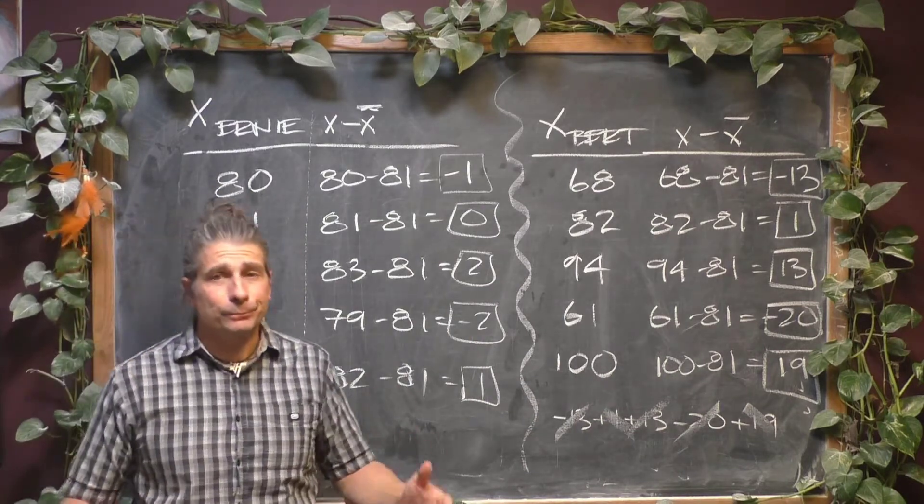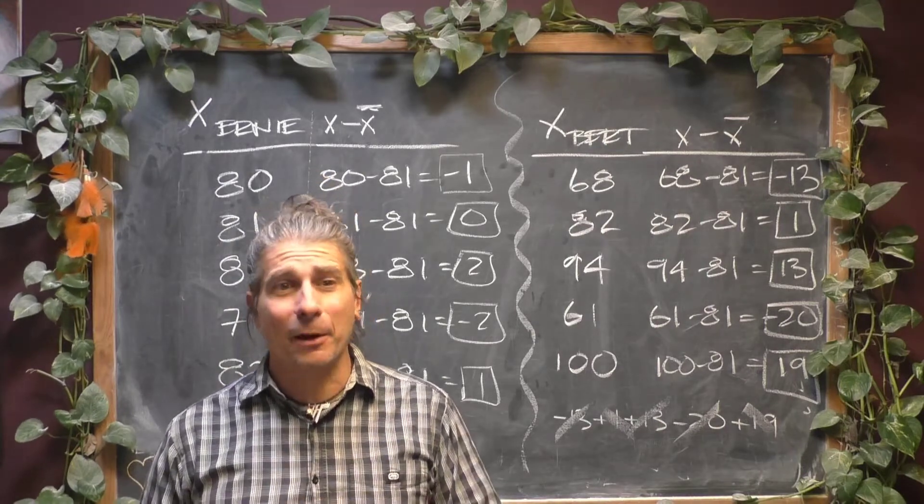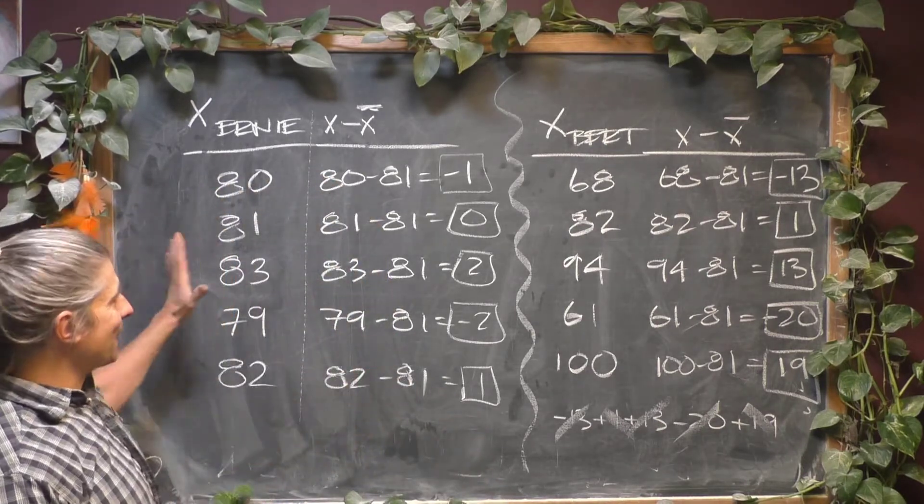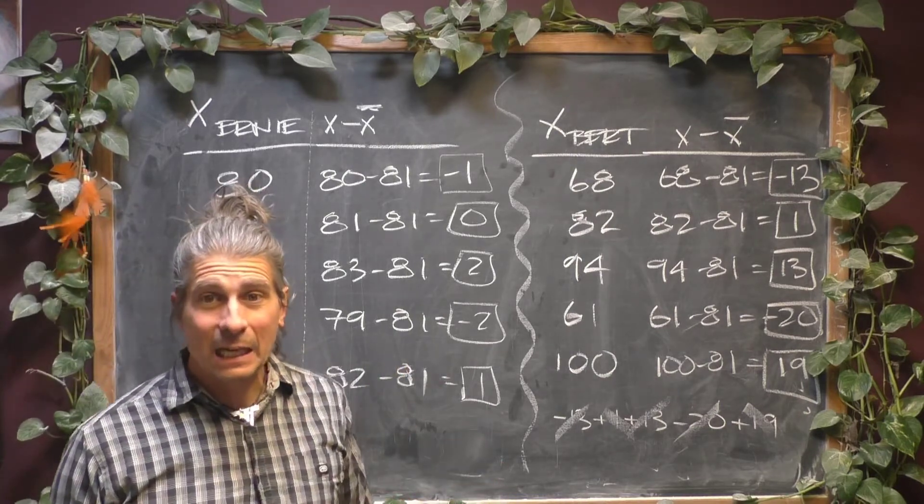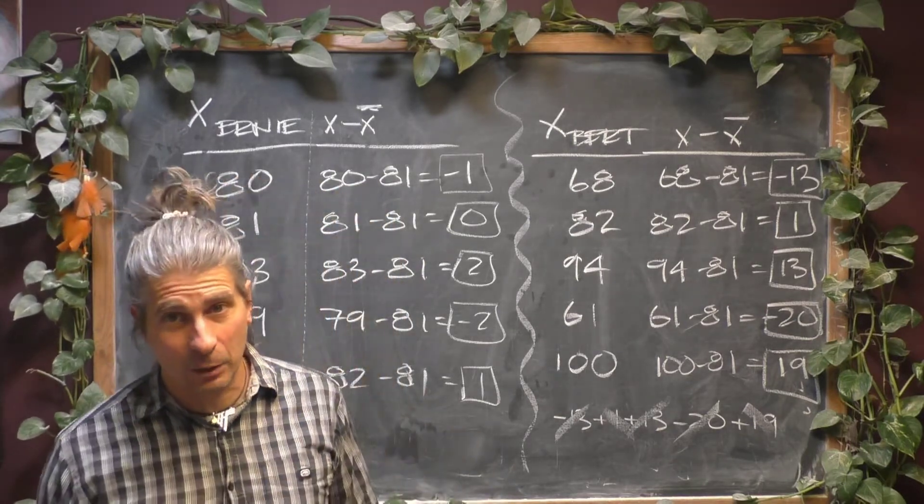But the problem is it appears as though when you look at the deviations from average of both of these, the deviations always sum to 0. And not to ruin the surprise, but that will always happen. It doesn't matter which data set you're dealing with. If you analyze the data set in this way, whether it's 5 data points or 5,000 data points, the sum of the deviations from average will always be 0.